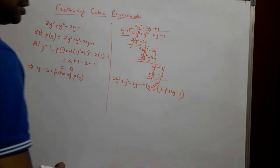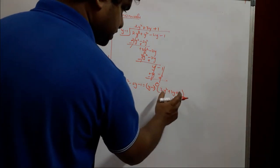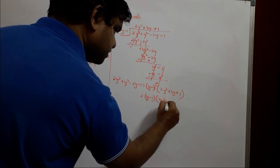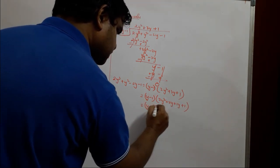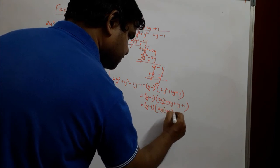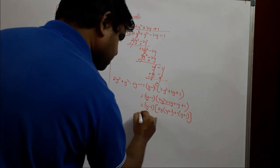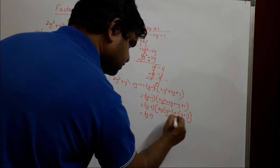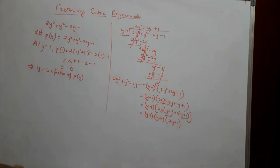So 2y³ + y² − 2y − 1 = (y − 1)(2y² + 3y + 1). To factor 2y² + 3y + 1, we split the middle term: 2 × 1 = 2, and 2 + 1 = 3, so we write 2y² + 2y + y + 1. Taking 2y common gives 2y(y + 1), and 1 common gives 1(y + 1). So the factors are (y − 1)(y + 1)(2y + 1).